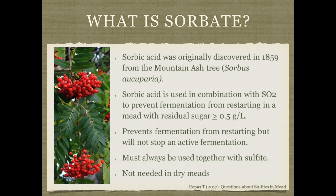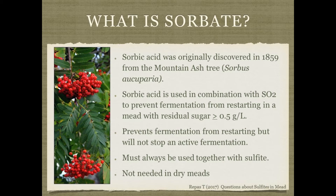For stabilizing mead with residual sugar, if you lack the ability to do true sterile filtration, use sorbate or sorbic acid in combination with sulfite to prevent re-fermentation in the bottle. Sorbic acid was discovered in 1859 from a mountain ash tree. Combined with sulfites, it prevents fermentation from initiating, but it will not stop active fermentation. Add it after fermentation is complete, before back-sweetening or bottling.